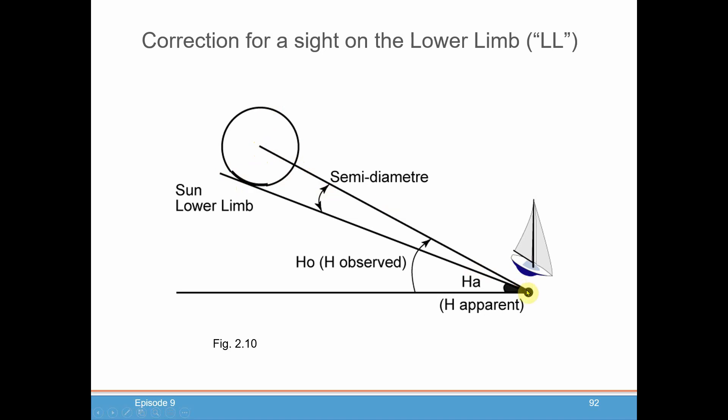Now, normally when you're measuring your angle of your celestial body, let's take the sun, you typically will be only measuring from the horizon to either the lower limb or the upper limb. And 99% of the time, you're going to use the lower limb, if at all possible, because it's the easiest one to use.